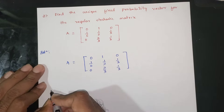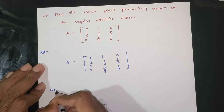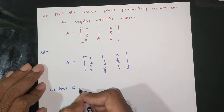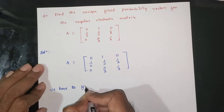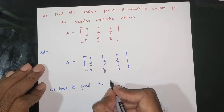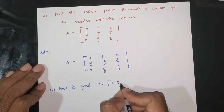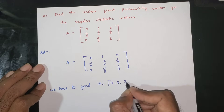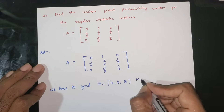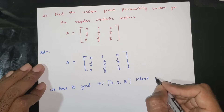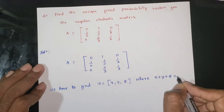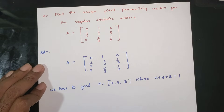We have to find v equal to [x, y, z], where x, y, z satisfy x plus y plus z is equal to 1.